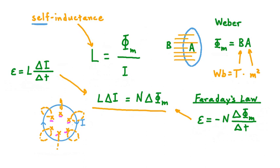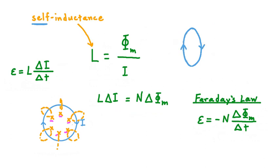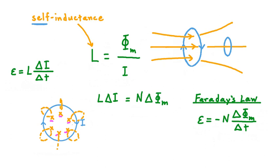Self-inductance isn't the only kind of inductance. Mutual inductance is another way for induction to happen. Say we have a current in a conducting loop creating a magnetic field through that loop. If we put a second conducting loop so that this magnetic field passes through it, there would be a magnetic flux in that second loop. Faraday's law says that a change in magnetic flux happening over some amount of time induces an EMF, meaning charge would start to flow in this loop. The change in magnetic flux could be the initial movement of this conducting loop into the magnetic field.